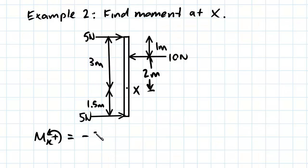So this will be negative five newtons times three meters. Now we move on to the next force, which is ten newtons, and it acts at this distance, which is two meters from X.